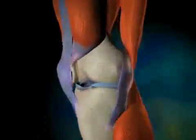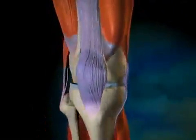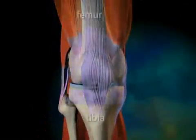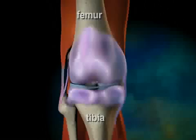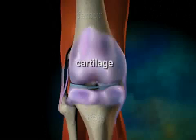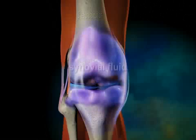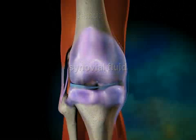In order to understand the changes that occur in the joints of a person with osteoarthritis, it is necessary to first understand how joints work. The two main bones of the knee are the femur and the tibia. In a normal knee joint, the connecting surfaces of these two bones are covered with cartilage, a smooth and strong material that cushions the impact between the bones. The joint is also surrounded by synovial fluid, which aids in joint mobility.